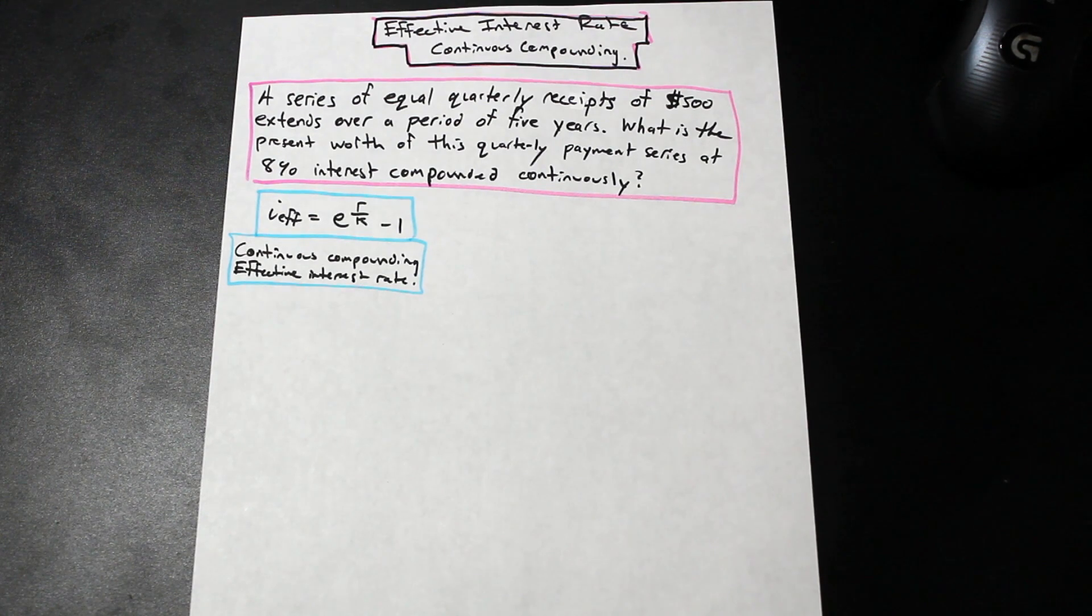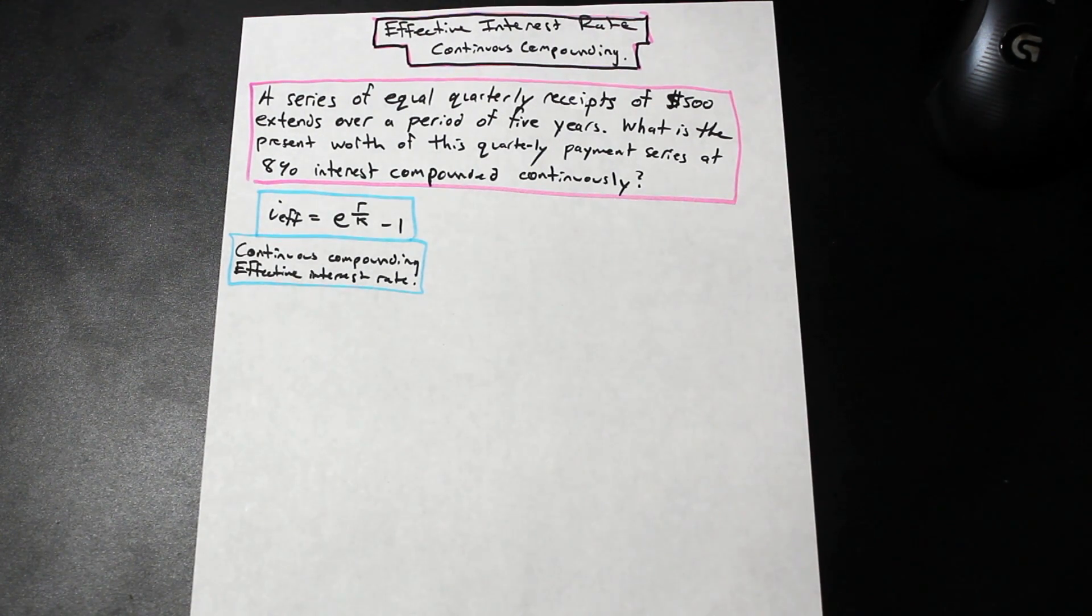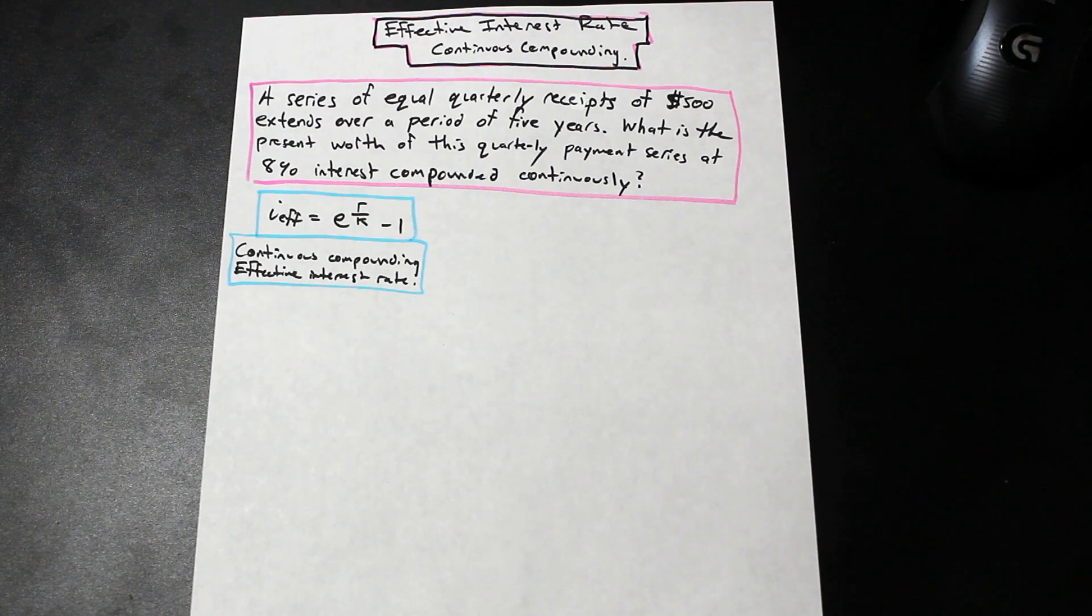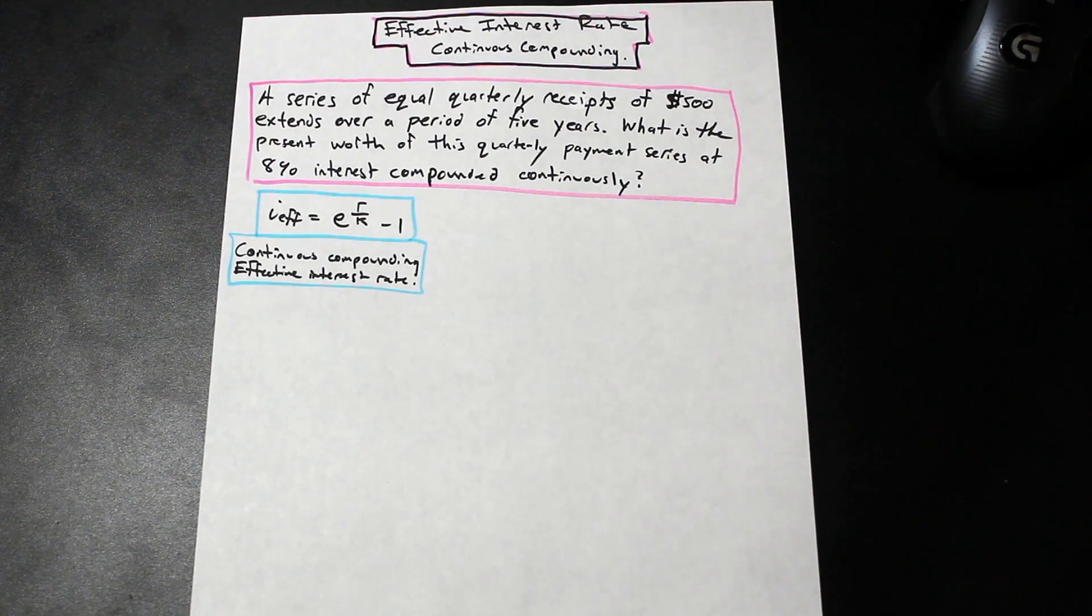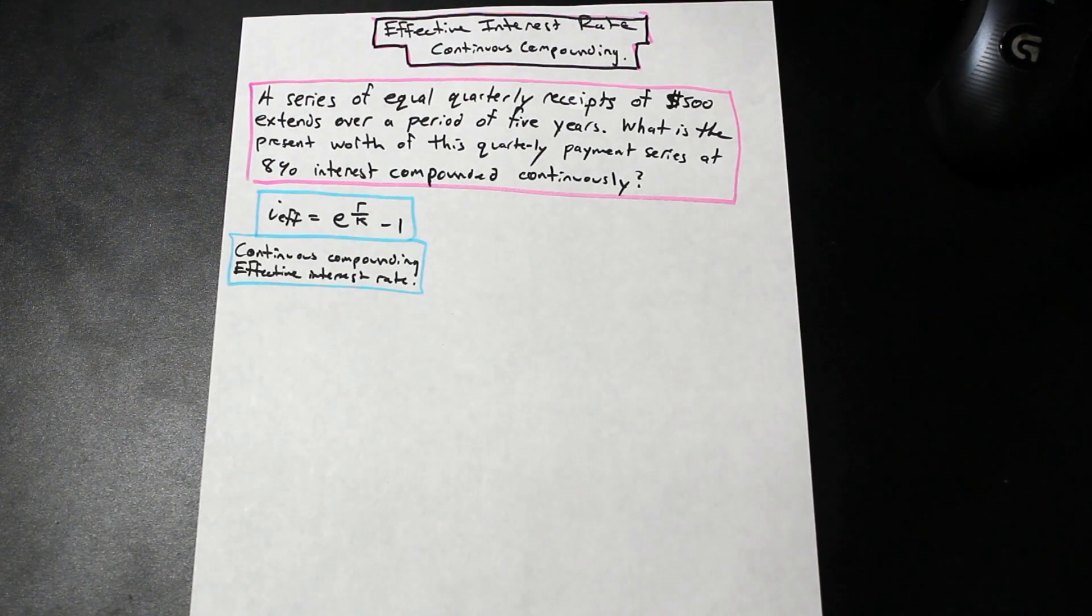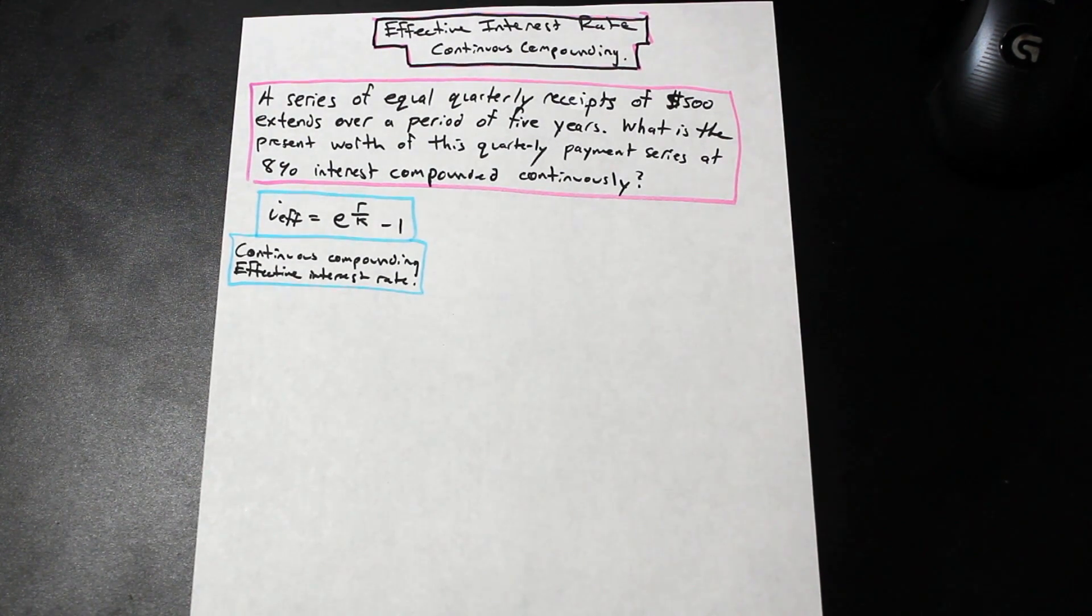We're continuing along with our effective interest rate videos. We did a video before on finding the effective interest rate when the compounding is at a different time frame but not continuous than the payment period. In this video we have a payment period and we have what's called continuous compounding.